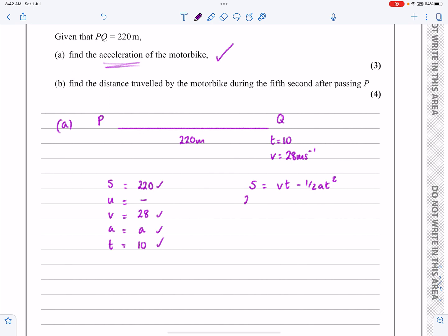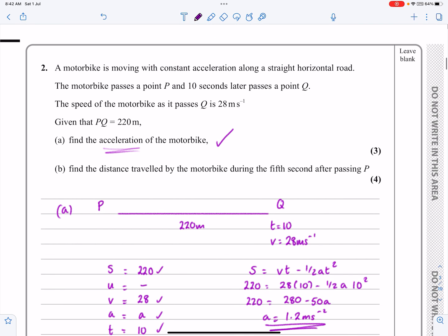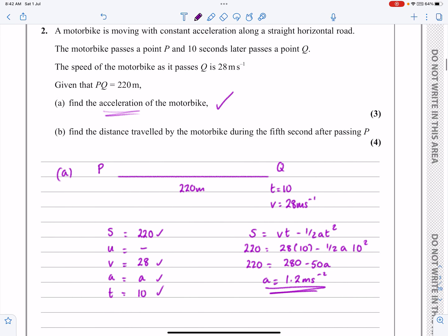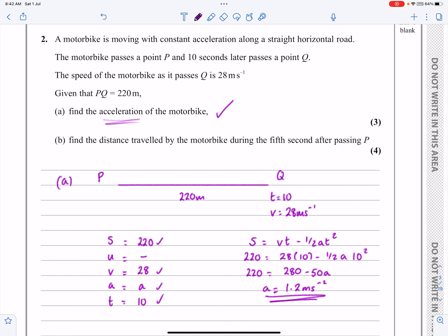So we get 220 is equal to 28 times 10 minus a half A times 100. So just tidy it all up. 220 is 280 minus 50A. And I'm not going to rearrange this. You should be able to do it from there. A works out to be equal to 1.2 meters per second squared. You can always maybe train yourself to have a quick check. Does that all make sense? As an absolute minimum, obviously it should be a positive acceleration there as we're going through. So yeah, no problem with part A.